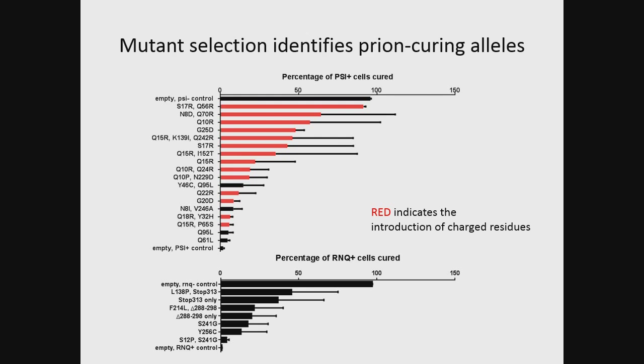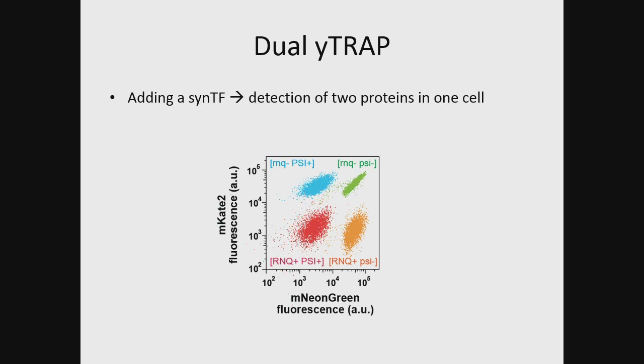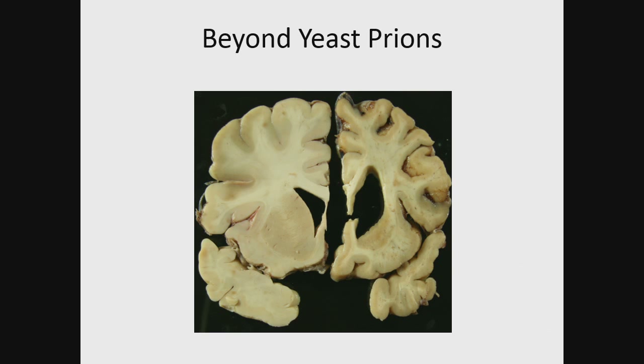Because we're using synthetic sensors, we're not limited to a single protein in a single channel. We've hooked up an additional transcription factor to a second protein and can measure the aggregation of two proteins in a single cell. Here I've shown the rink and psi prions in all four combinations and how we can detect each distinct combination separately. Using this system has allowed us to find very efficient prion-inducing alleles — we can bring the psi protein onto the rink aggregate and efficiently template it so that 100% of cells will be induced to adopt the psi state. This allows us to have synthetic switches controlled by prion states, determining whether the population is in a low-expression prion state or a high-expression non-prion state.